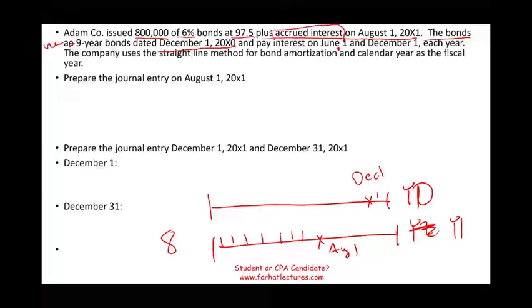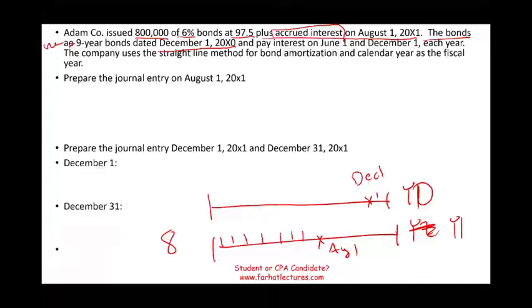The bond pays interest on June 1st and December 31st. Although it was not issued until August 1st, it pays interest on December and on June. That means we are going to assume that all the accrued interest was prepared accordingly. The company uses the straight-line method for bond amortization and a calendar year as its fiscal year, which ends December 31st. First, they want us to prepare the journal entry on August 1st when the bond was issued.